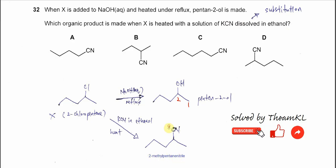This is the first carbon, second carbon, third carbon, fourth carbon, fifth carbon. On the second carbon there is a methyl group, so we call this 2-methylpentanenitrile. Therefore the answer is D.